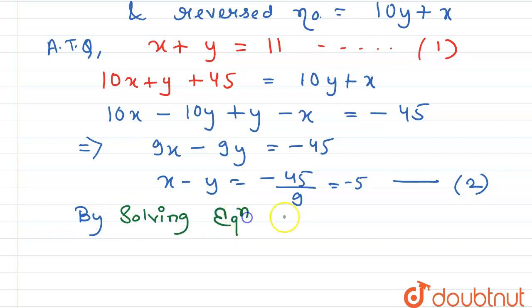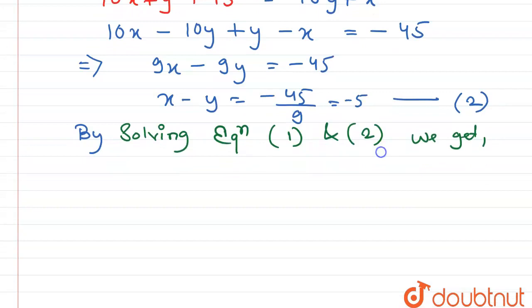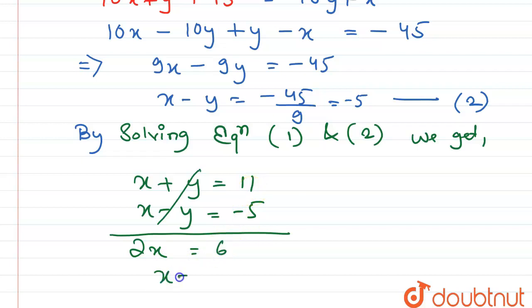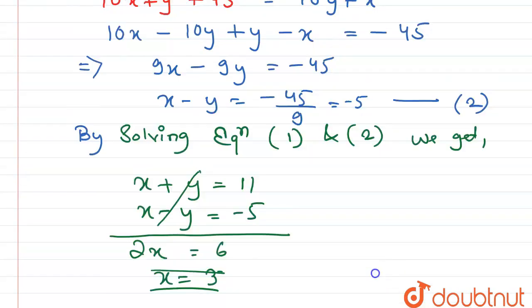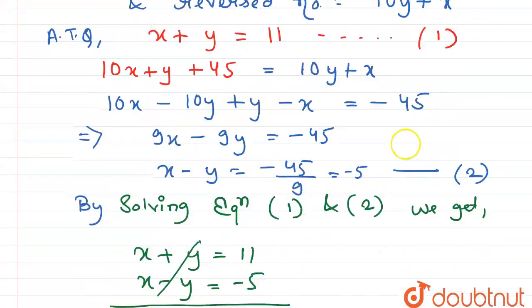We get x plus y equals 11, x minus y equals minus 5. So now add this equation. We get 2x equals 6, so x equals 3.